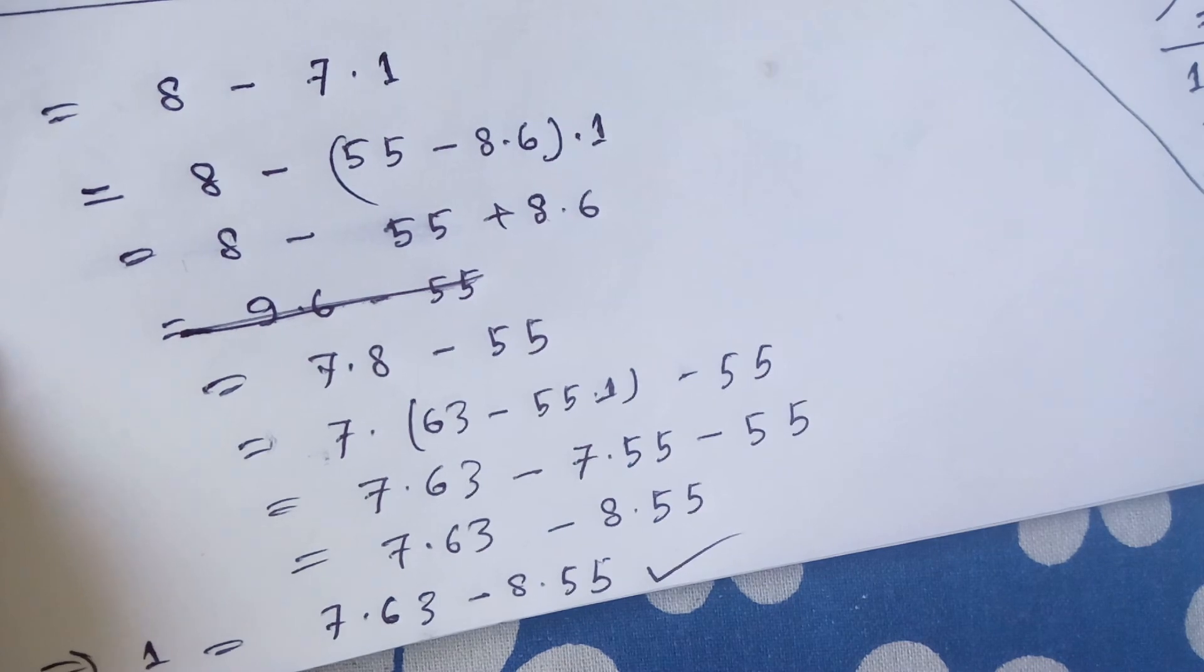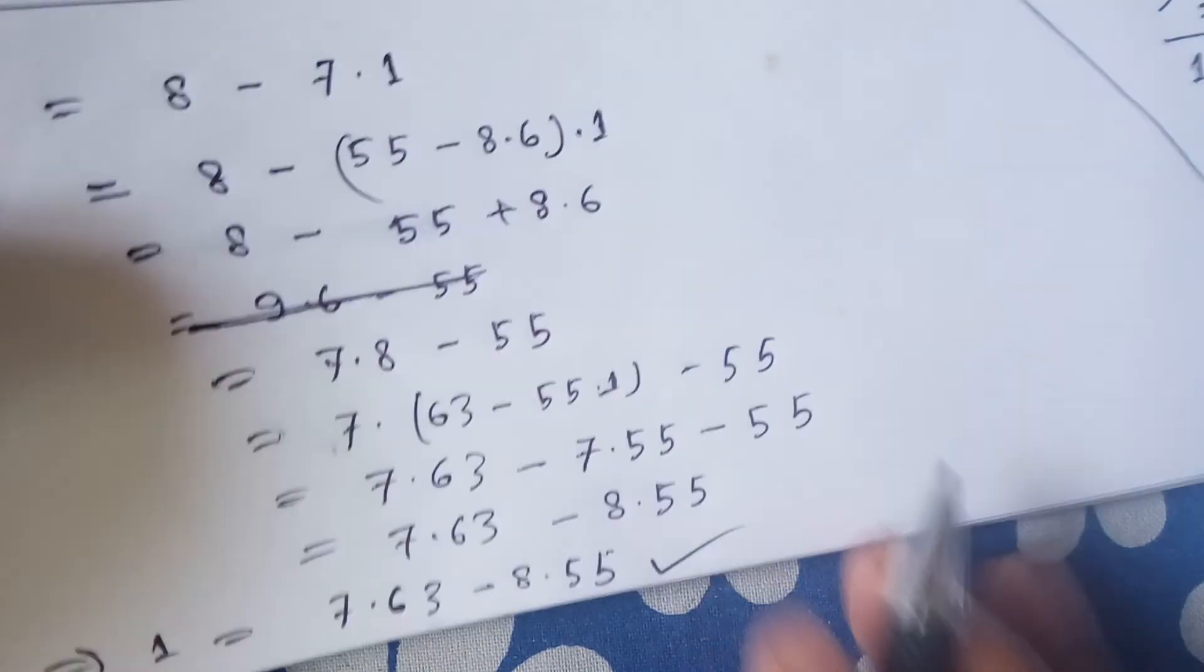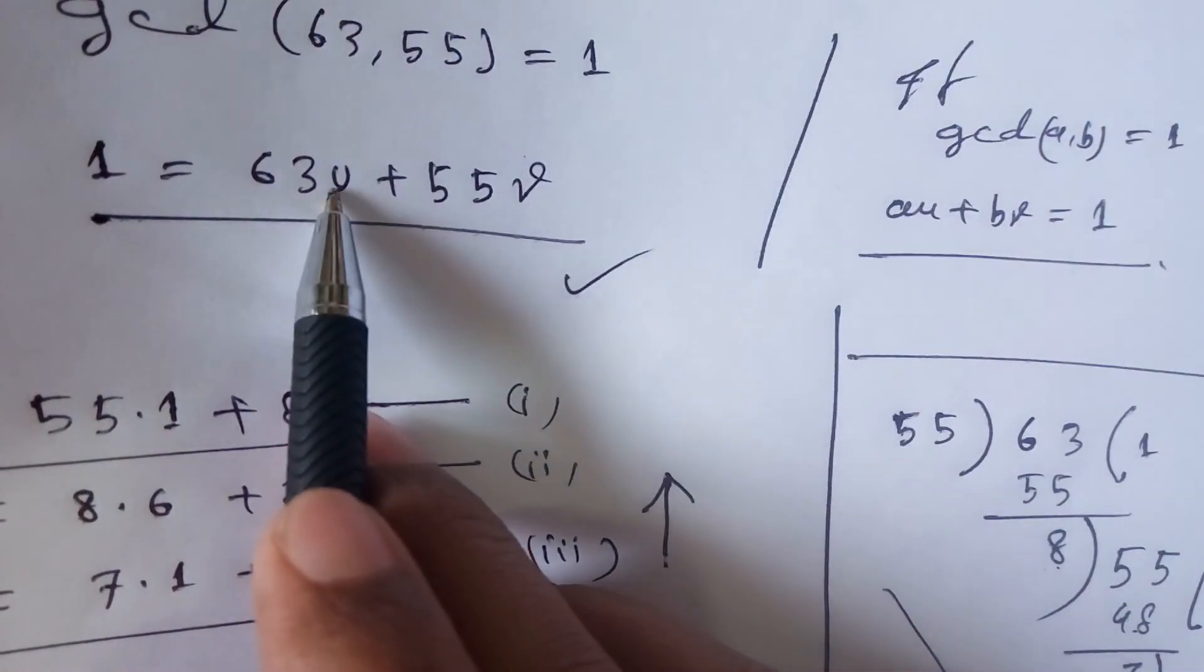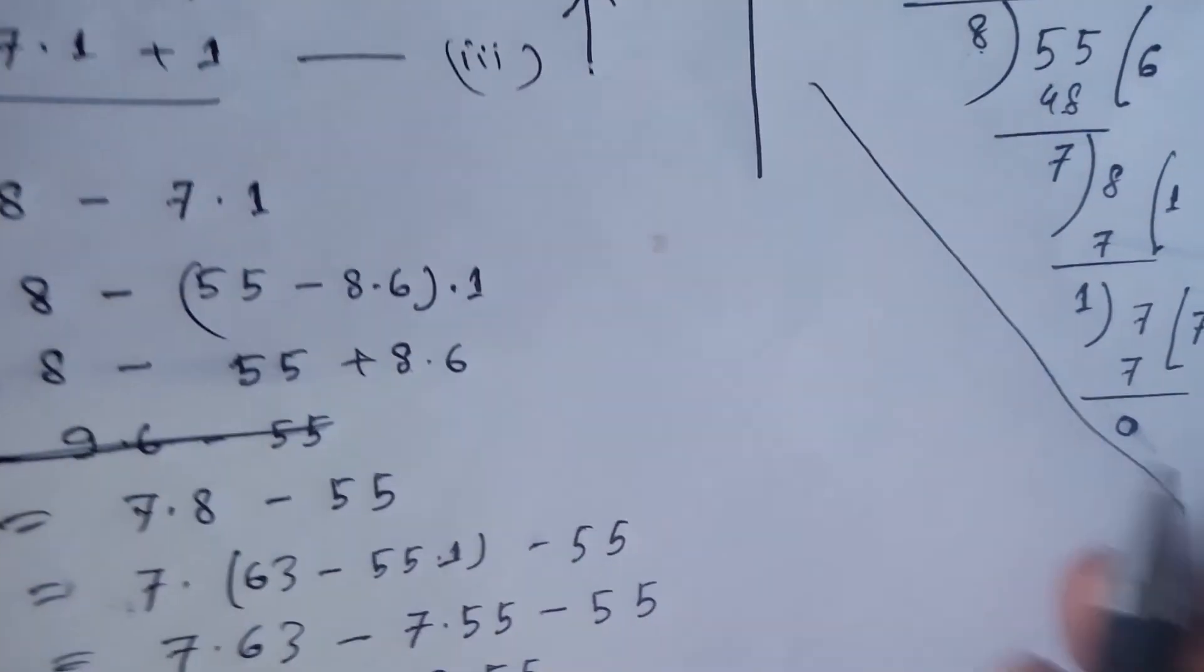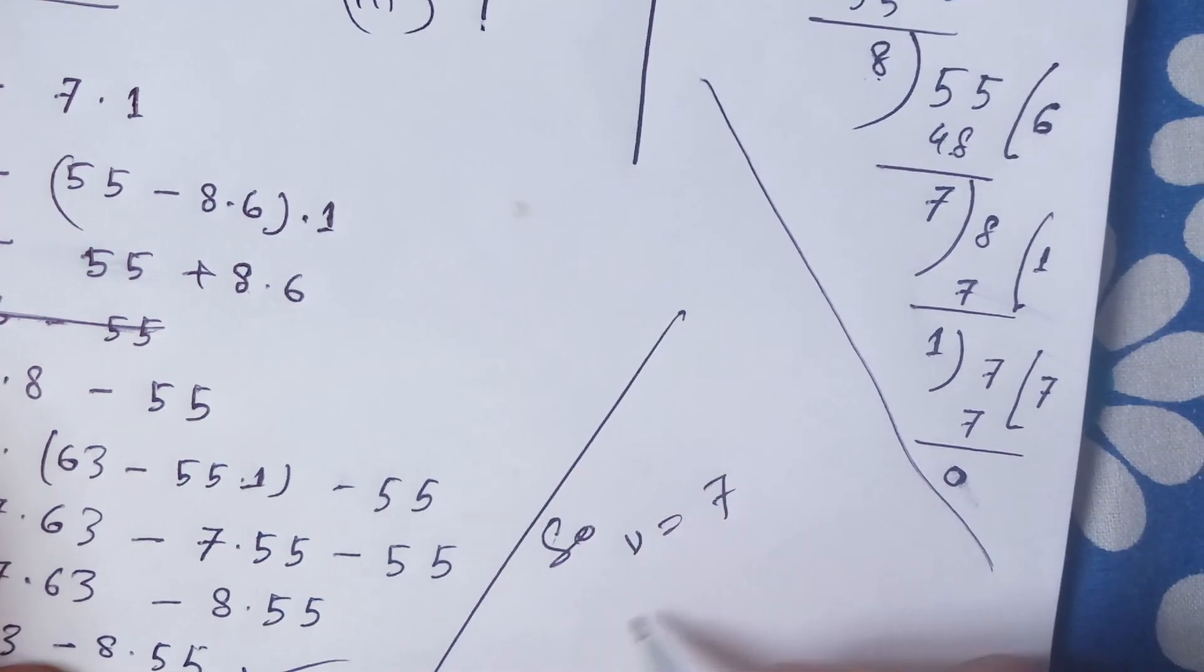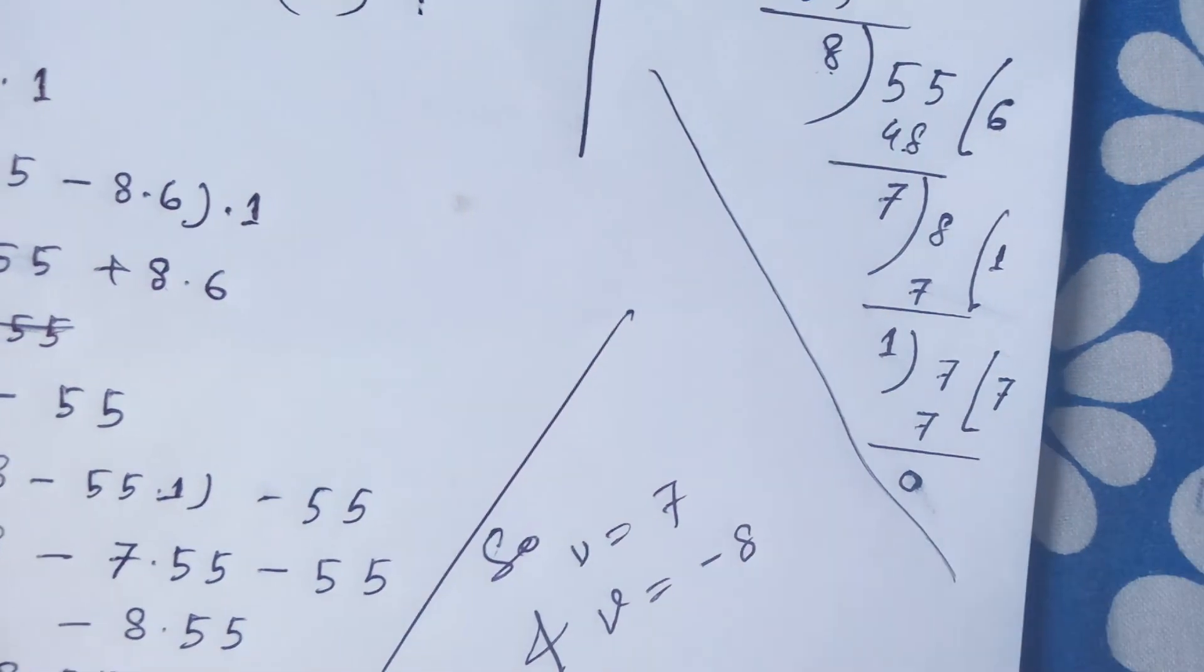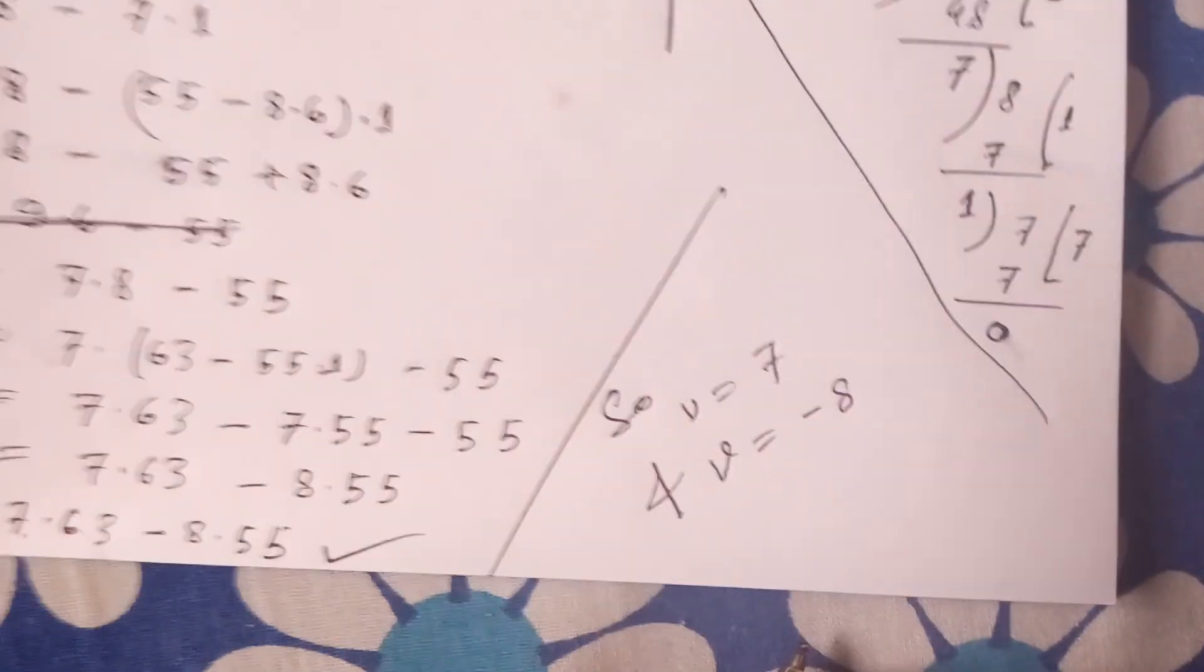Comparing the equations, we get u equal to 7 and v equal to minus 8. So u equals 7 and v equals minus 8. These are the solutions of the above equation.